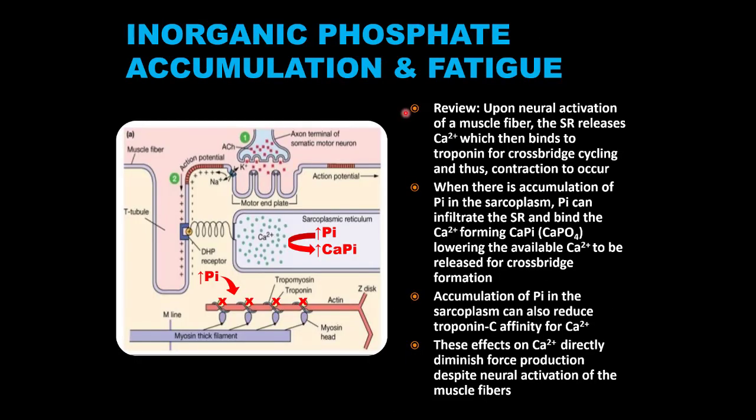Other than proton accumulation, the accumulation of inorganic phosphates in the sarcoplasm also contributes to acute muscular fatigue and is part of this stress response mechanism. Inorganic phosphate accumulation does not contribute to acute metabolic acidosis, but it does contribute to fatigue. The effect of inorganic phosphate accumulation on muscle contractions is very direct — it directly interferes with processes critical for muscle contraction.